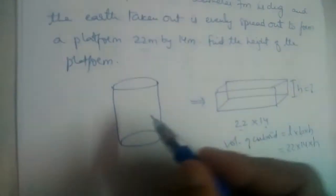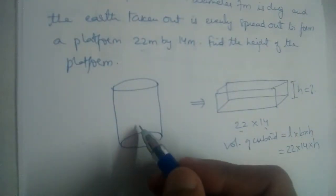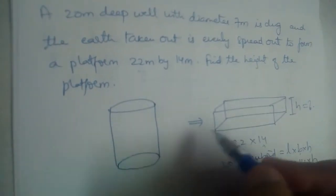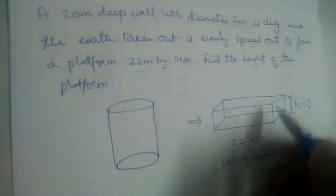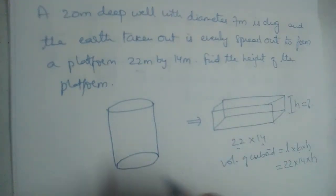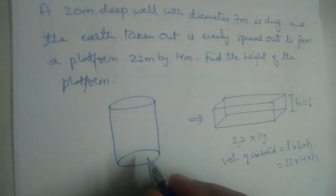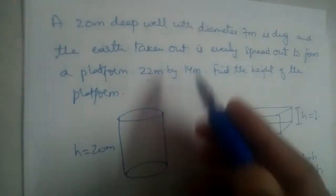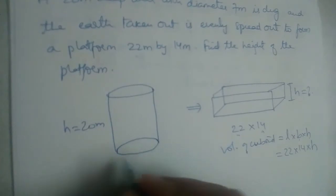Volume of this cylinder is equal to the volume of this cuboid. What are the dimensions of this well? 20 meters deep means height is 20 meters and diameter 7 meters, so if diameter is 7, radius will be 7 by 2 meters.